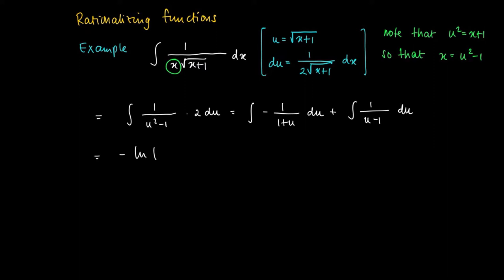So a primitive is easily found since the primitive of minus 1 over 1 plus u divided by 1 plus u equals minus the natural logarithm of the absolute value of 1 plus u plus the logarithm of the absolute value of u minus 1.